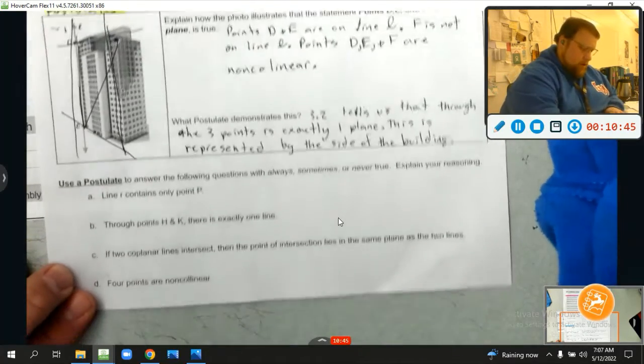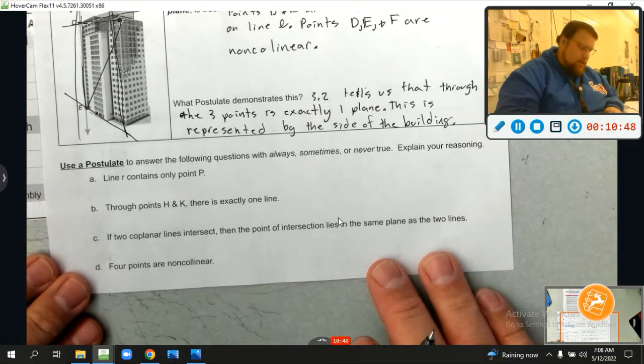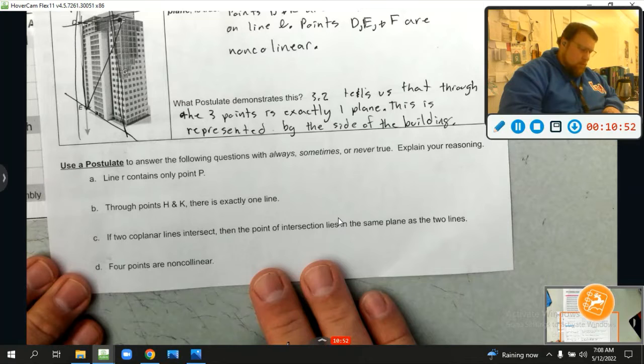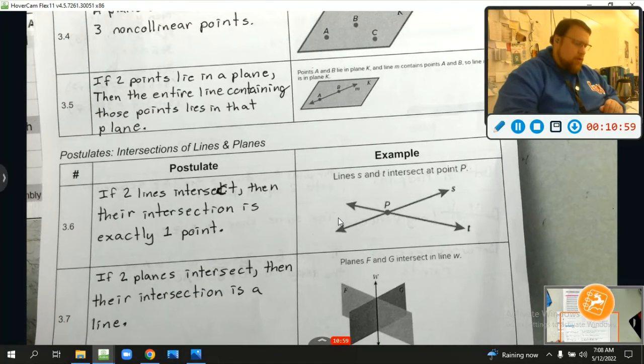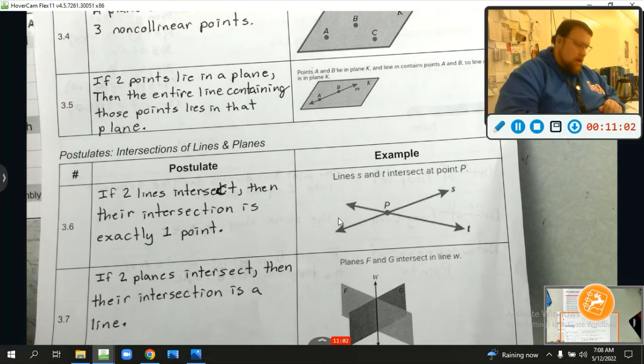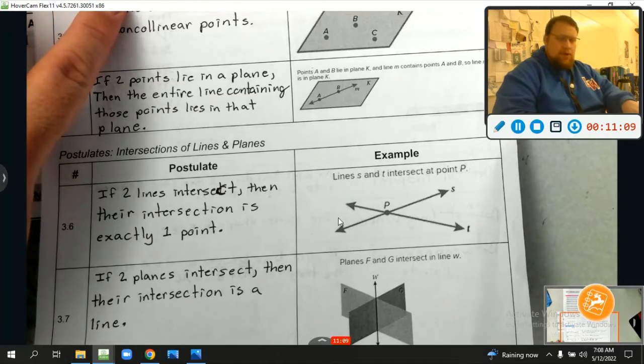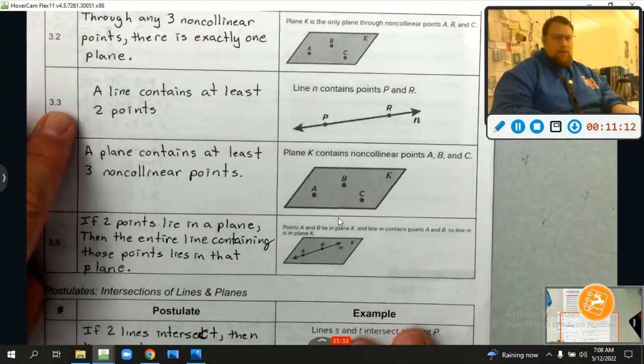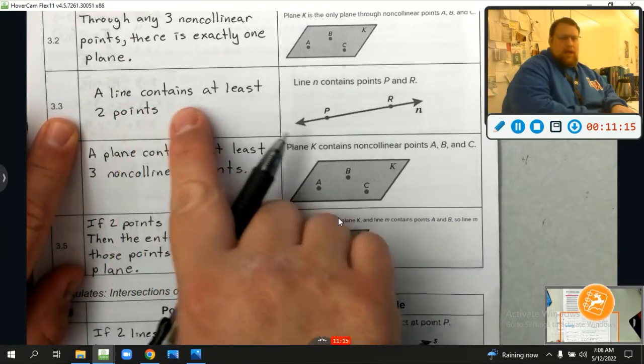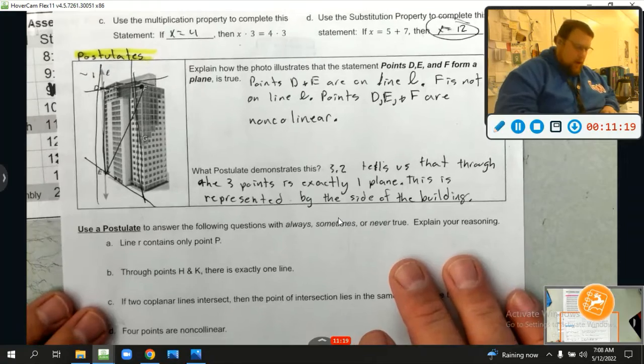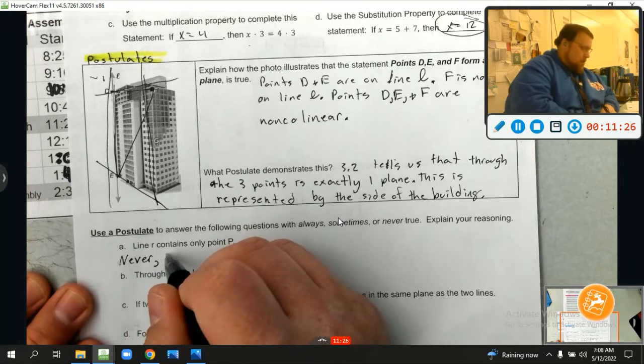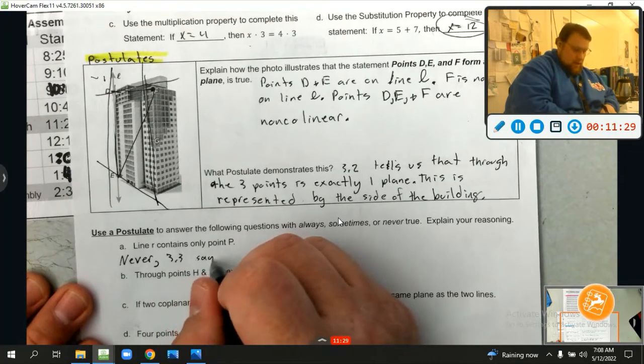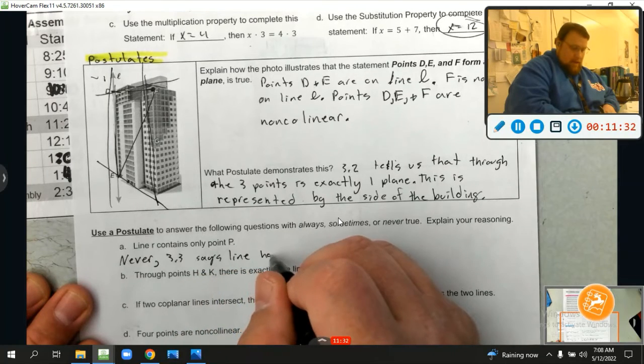All right. We're going to do more postulate work right here. We're going to use the postulates to answer the following. Let's look at our theorem about lines. What does it say? Or our postulate. Through any two points, there's exactly one line. Okay. How about this one? Let's look at 3.3. A line contains at least two points. You see that? 3.3. A line contains at least two points. What does that mean? Let's look at this right here. It says line R contains only point B. Well, that can't be. So, that's a never.